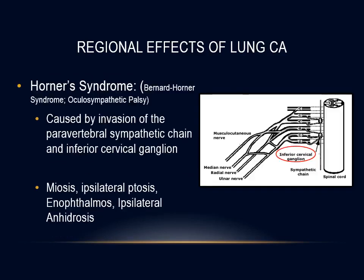Horner syndrome consists of ipsilateral ptosis with narrowing of the palpebral fissure, miosis, enophthalmos, and anhidrosis, caused by involvement of the paravertebral sympathetic chain and inferior cervical ganglion. Ipsilateral flushing and increased sweating of the face may occur before full Horner syndrome develops, presumably due to irritation of the sympathetic chain by the tumor prior to frank invasion.